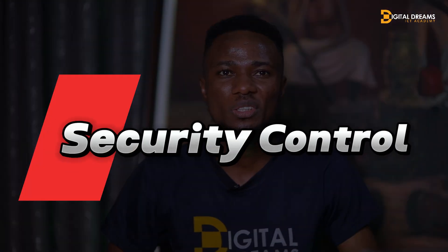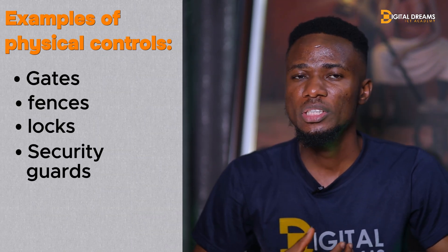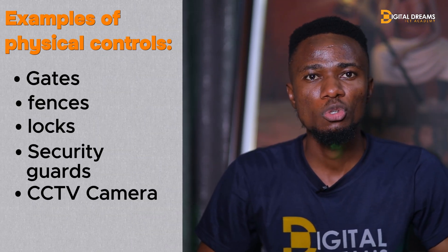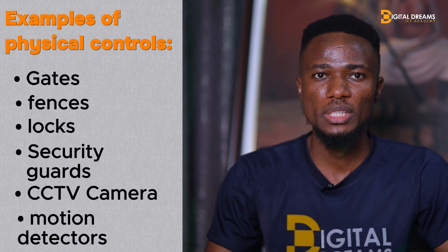Next, let's discuss Security Controls. Controls are used alongside frameworks to reduce the possibility and impact of a security threat, risk, or vulnerability. Controls can be physical, technical, and administrative, and are typically used to prevent, detect, or correct security issues. Examples of physical controls include gates, fences, locks, security guards, CCTV cameras, and motion detectors. Technical controls include firewalls, multi-factor authentication (MFA), and antivirus software. Administrative controls include Separation of Duties, authorization, and asset classification.